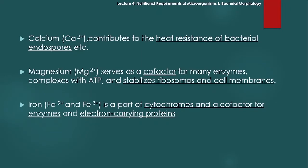Magnesium serves as cofactor for many enzymes, complexes with ATP، and stabilizes ribosomes and cell membranes۔ یعنی magnesium several enzymes کے لیے بطور cofactor کام کرتا ہے، enzymatic activity کو facilitate کرتا ہے، ATP کے ساتھ complexes بناتا ہے، اور ribosomes اور cell membranes کو stabilize کرتا ہے۔ اسی طرح iron — ferrous iron اور ferric iron — it is a part of cytochromes and cofactor for enzymes and electron carrying proteins۔